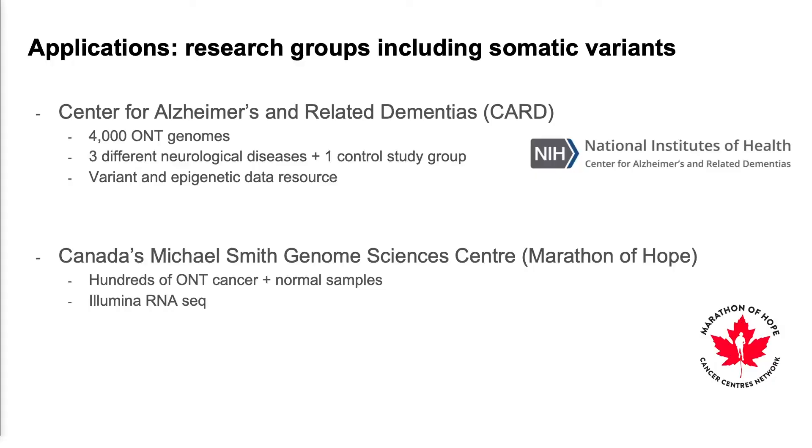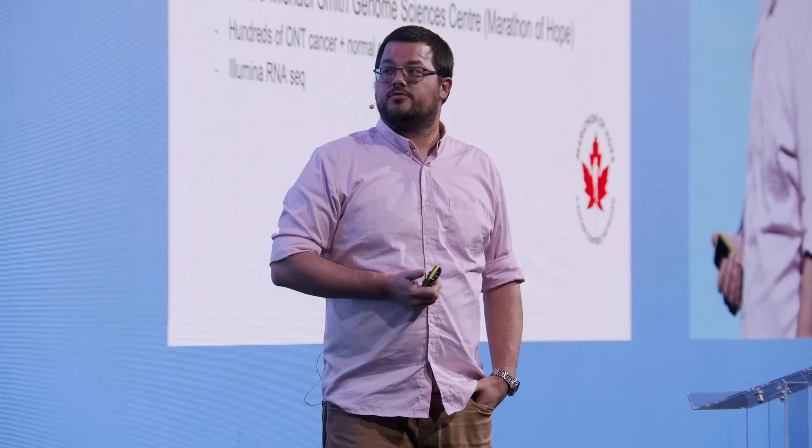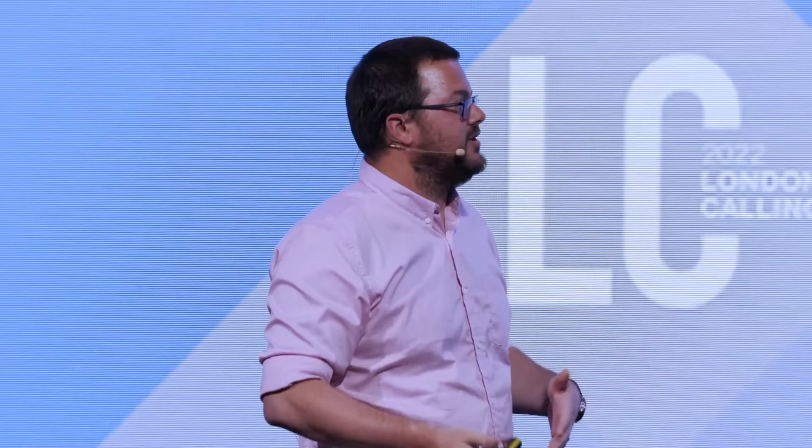One place we're applying this is the Center for Alzheimer's and Related Dementia (CARD) at the NIH, which is sequencing 4,000 brain samples with Oxford Nanopore, identifying rare mutations across three different neurological diseases plus a study control cohort. The variants and epigenetic data will be available as a data resource for subsequent studies. We also have a great collaboration with the Marathon of Hope, where we are already doing Nanopore sequencing on cancer and normal samples, and I'm really excited to look at how these structural variants manifest possibly in Illumina RNA-seq data and isoform-level expression.